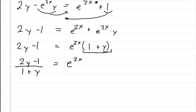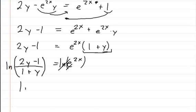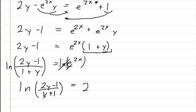Now at this point you just need to get rid of this e, so I'm going to raise everything to the natural log. So this will be ln of 2y minus 1 divided by 1 plus y is equal to — and when you do the natural log here, the natural log and the e cancel out. So you're going to be left with the natural log of 2y minus 1 divided by y plus 1, and that's going to be equal to 2x.